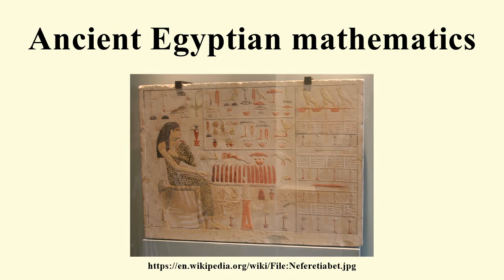Ancient Egyptian texts could be written in either hieroglyphs or in hieratic. In either representation the number system was always given in base 10. The number 1 was depicted by a simple stroke; the number 2 was represented by two strokes, etc. The numbers 10, 100, 1,000, 10,000, and 1,000,000 had their own hieroglyphs.